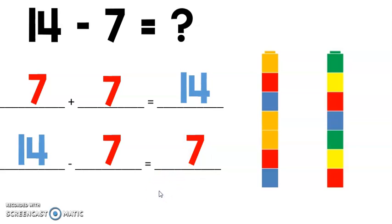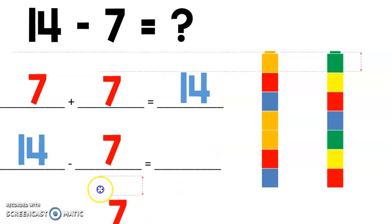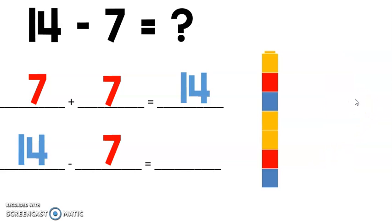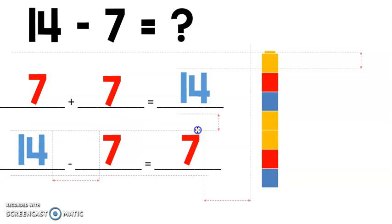Now let's check our work. We always want to check our work and make sure we're right. So let's see. 14. I have my 14 blocks here and I'm taking away 7. So I'm going to take away 1, 2, 3, 4, 5, 6, 7 cubes. Let's see. How many cubes are left? 1, 2, 3, 4, 5, 6, 7. So we were right!